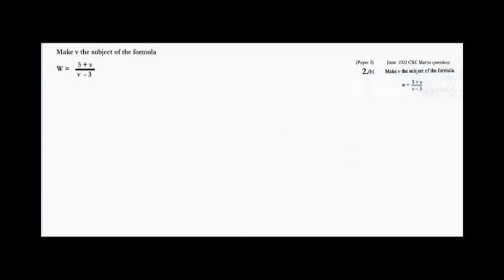The first thing I am going to do is to rewrite the problem. Then I am going to multiply both sides by V minus 3, because whatever you do on one side of the equation you must do the same on the other side. So I am going to cancel this V minus 3 with this V minus 3.